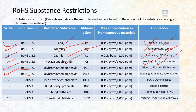The fifth and sixth restricted substances are polybrominated biphenyls (PBB) and polybrominated diphenyl ethers (PBDE), which are added to plastic materials to increase durability, and are used in manufacturing TV bodies, monitors, remotes, airplanes, and automobiles. These were the first six substances restricted under RoHS 1.